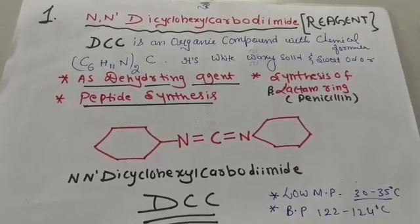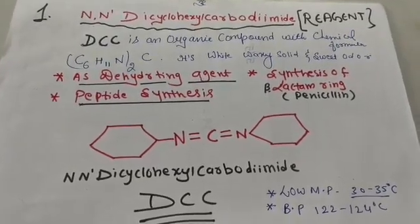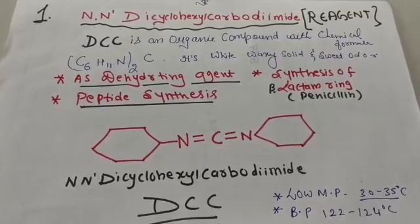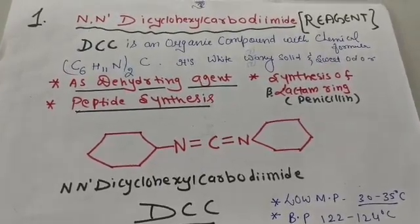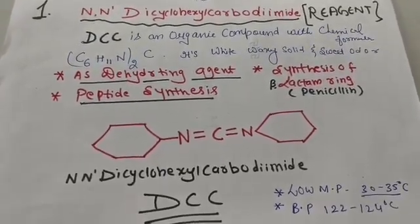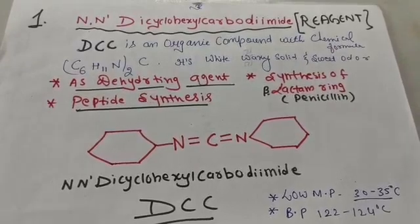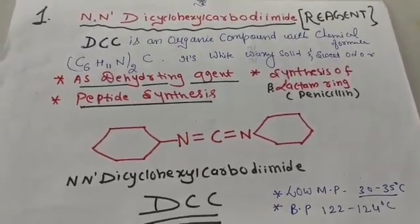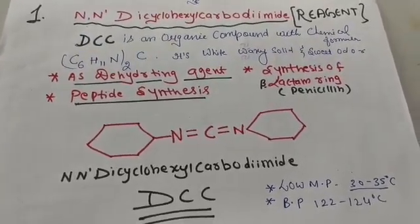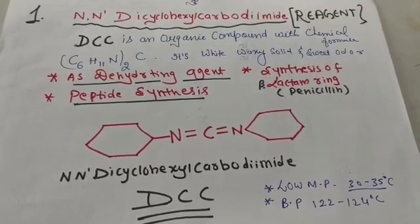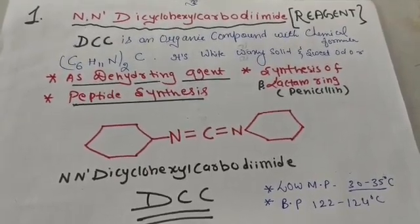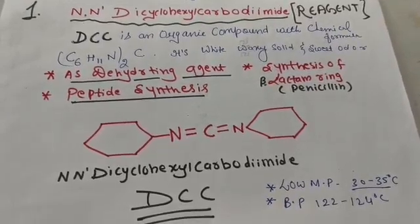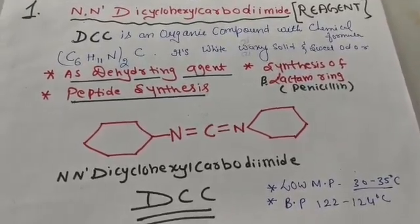Welcome to Pacific Chemistry Classes. Today we are going to study the reagent DCC. The full form of DCC is dicyclohexyl carbodiimide — sometimes written as DCC or N,N-dicyclohexyl carbodiimide.